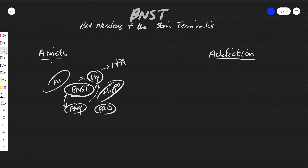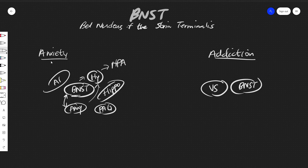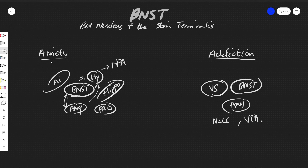For addiction, the key circuit involves the BNST, the ventral striatum, and the amygdala, which also includes the nucleus accumbens and the ventral tegmental area. There's not a lot of in-depth information I have on exactly how this circuitry works, but this is roughly what the addiction circuitry looks like — and again, the Google Docs has more detail.